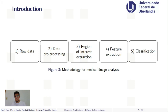CAD systems usually have five steps as a global methodology for medical image analysis. The first step is raw data. The second step is data preprocessing. The third step is region of interest extraction. The fourth step is feature extraction. And the fifth step is usually classification, segmentation, and others.